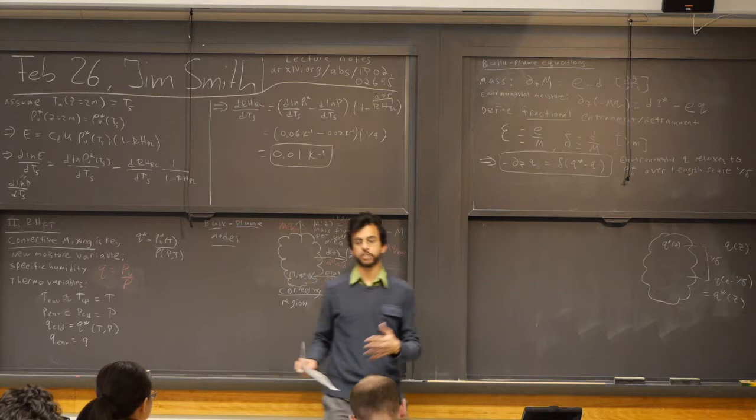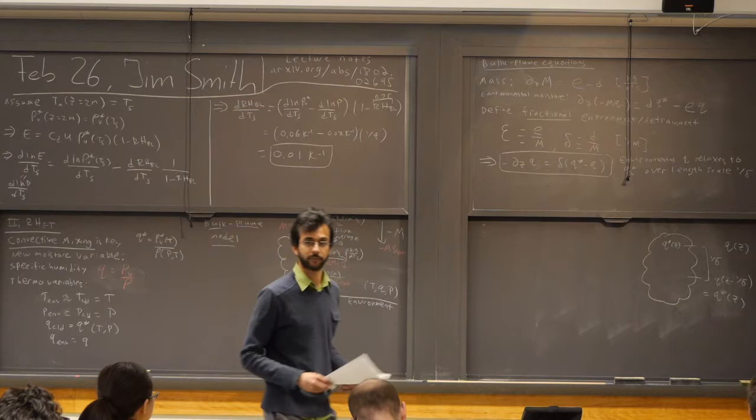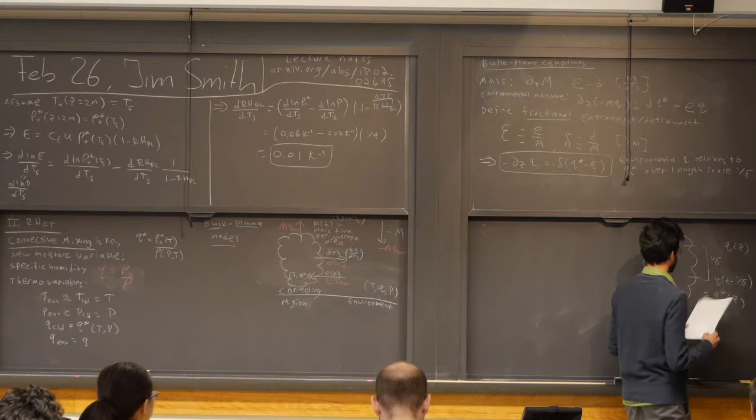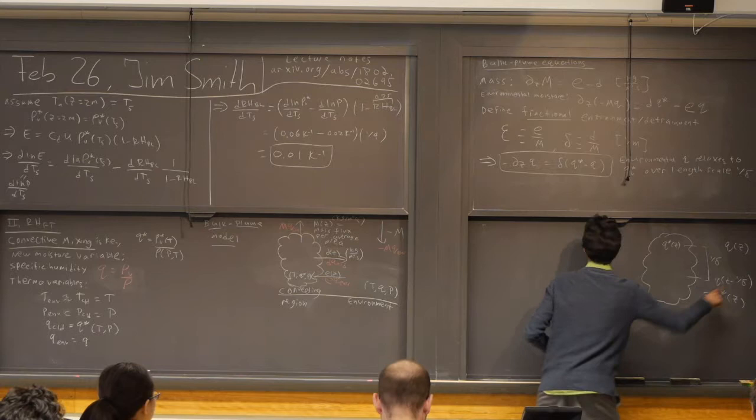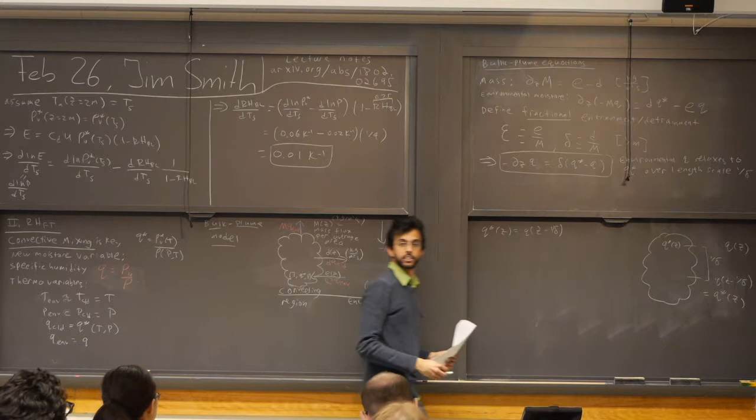We define gamma as minus d(log Q_star)/dz — the fractional rate at which Q_star declines with height, in units of one over meters. It's also a length scale: how high do you have to go for Q_star to decline by a factor of 1/e? That's what it is. So finally — and this is what we've been working toward — the relative humidity in the free troposphere can be written as just a function of two numbers: delta over (delta plus gamma).